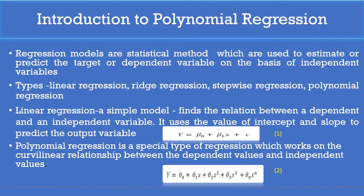What is regression? Regression is a statistical method used to estimate or predict the target or dependent variable based on the value of independent variable or predictor. Regression is classified as linear regression, ridge regression, stepwise regression, and polynomial regression.